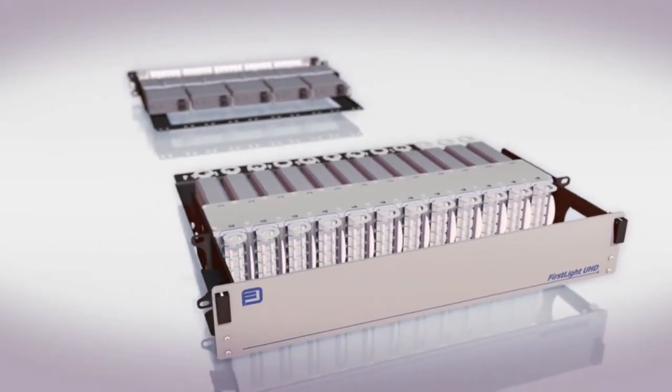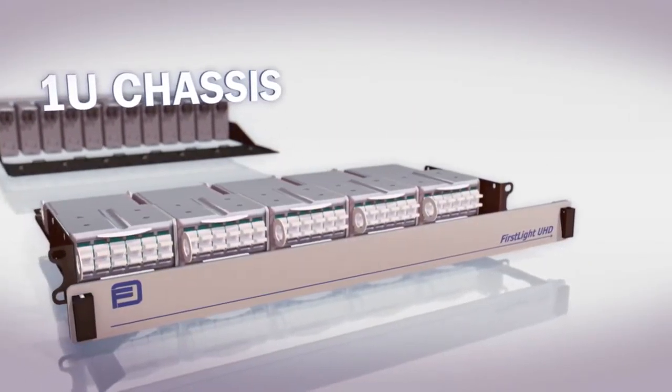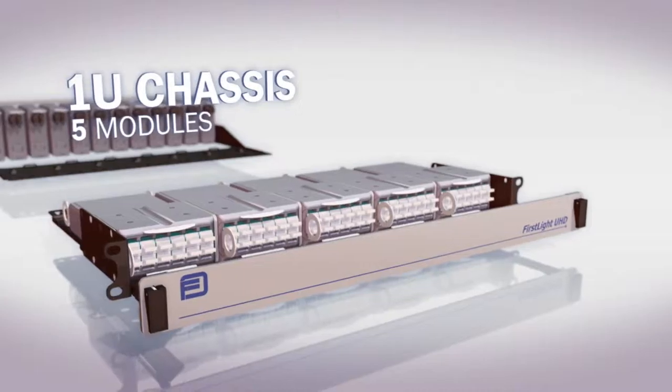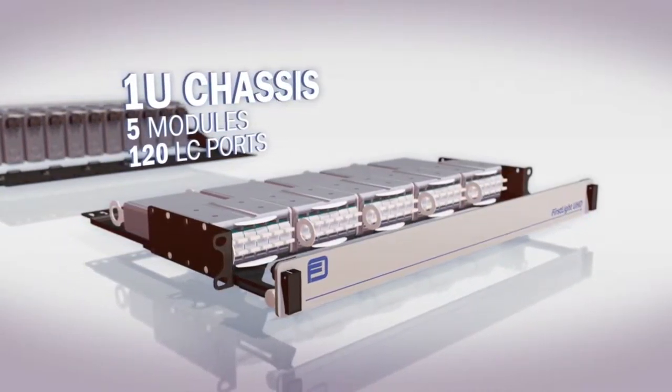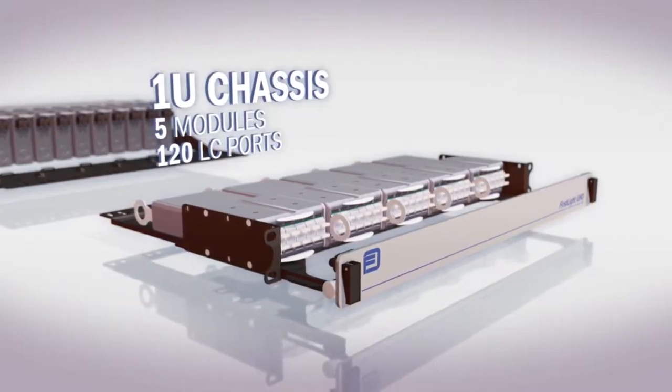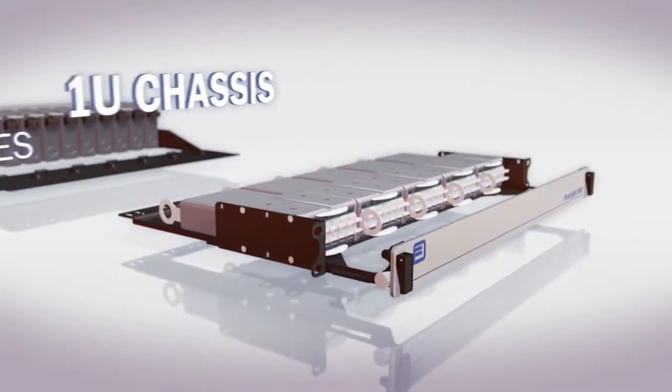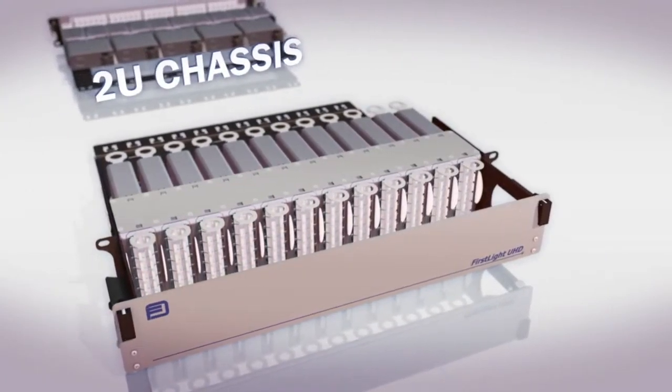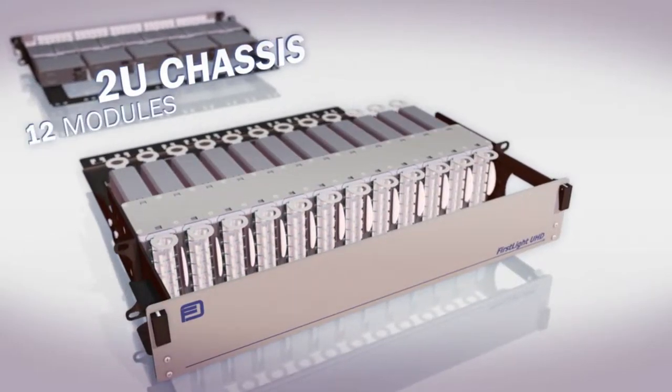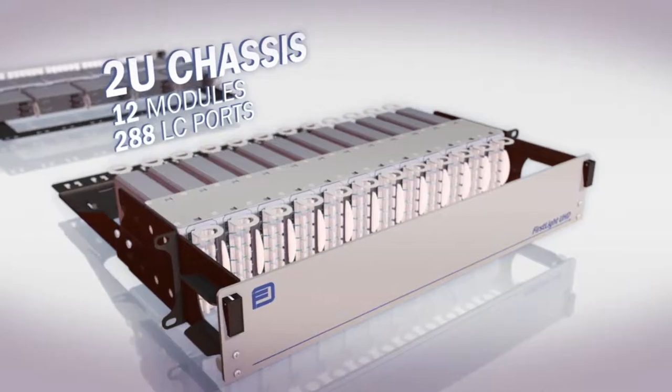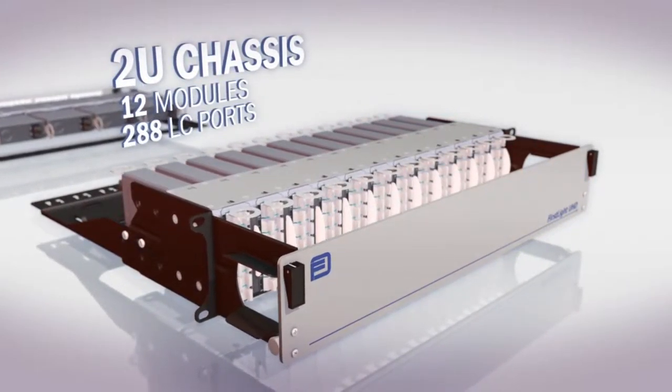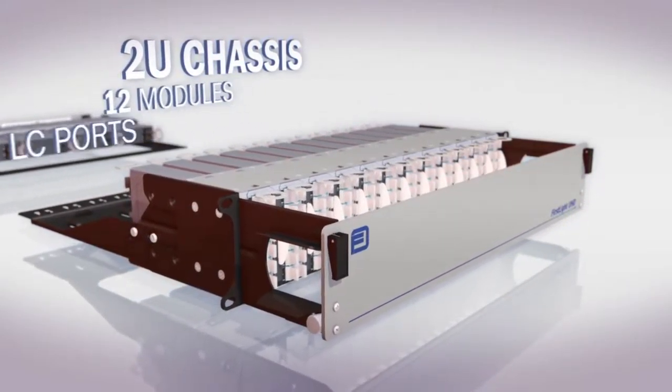Two housing options are available. The first is the 1U chassis which supports up to 5 modules, facilitating 120 LC ports or 960 fibers using MPO MTP interface. The second is a 2U chassis which supports up to 12 modules, facilitating 288 LC ports or 2340 fibers using MPO MTP interface.